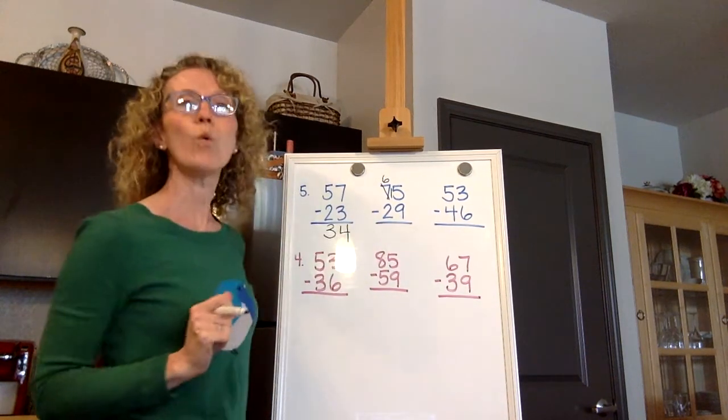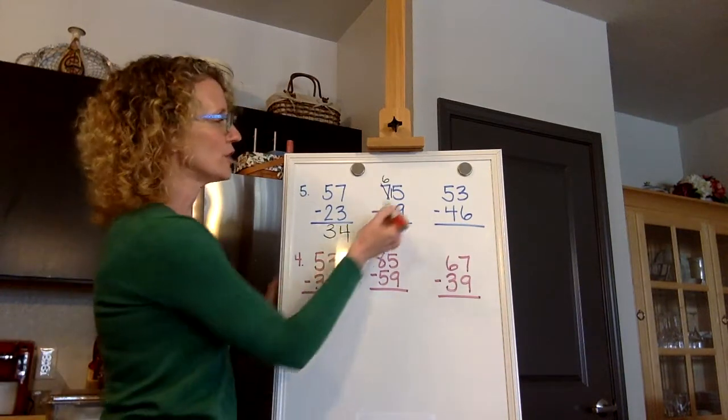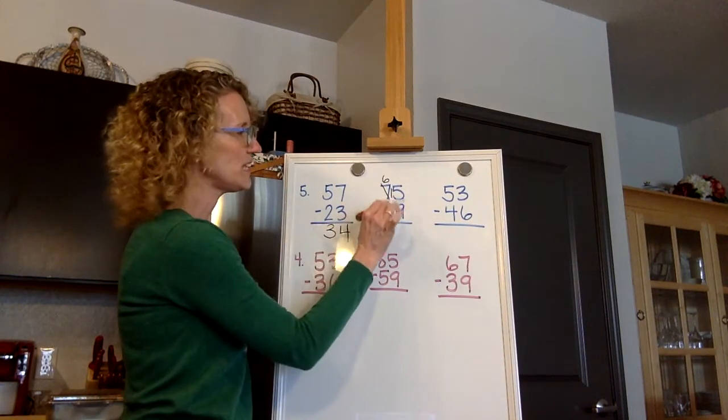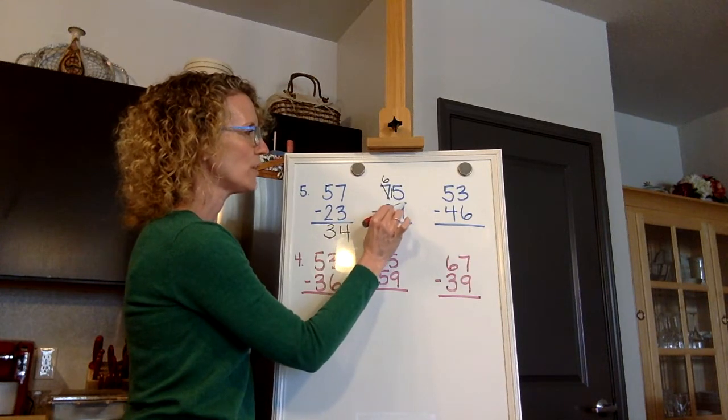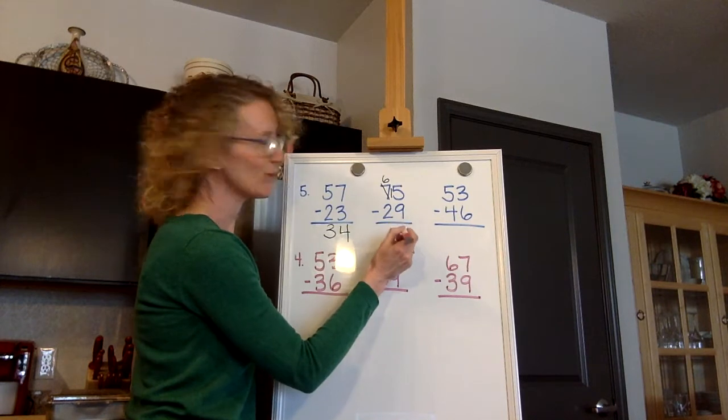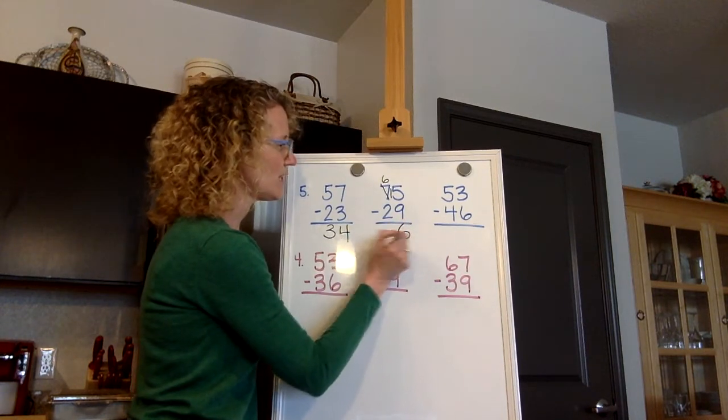All right, now we're ready to subtract. So think of this number right here. One, five, fifteen. Fifteen minus nine? Fifteen, fourteen, thirteen, twelve, eleven, ten, nine, eight, seven, six. That's your touch points if you're using them. Six. Fifteen minus nine is six.